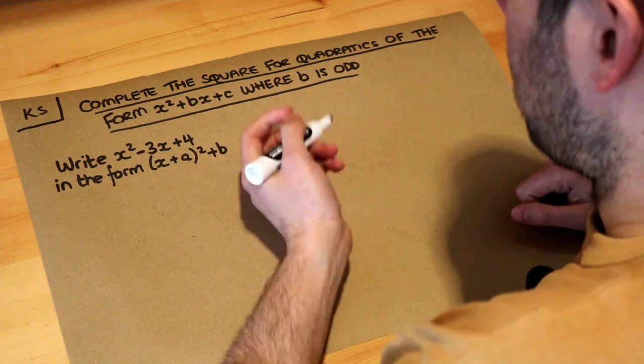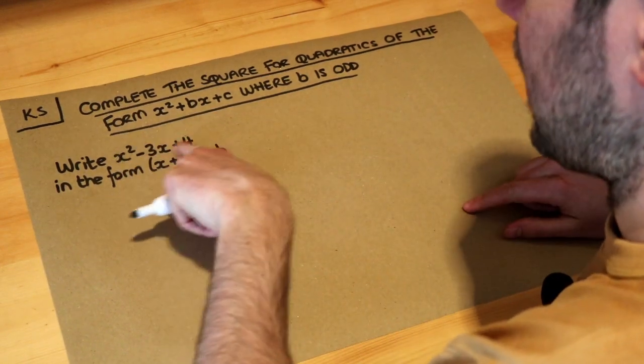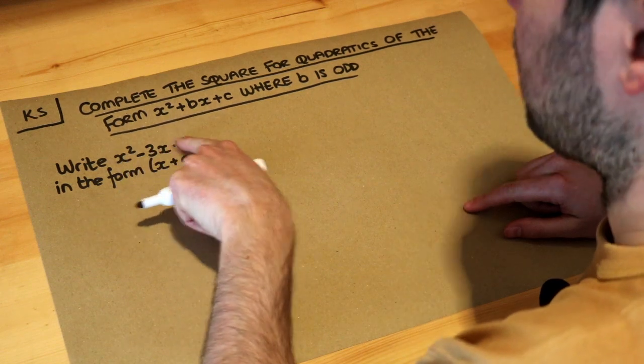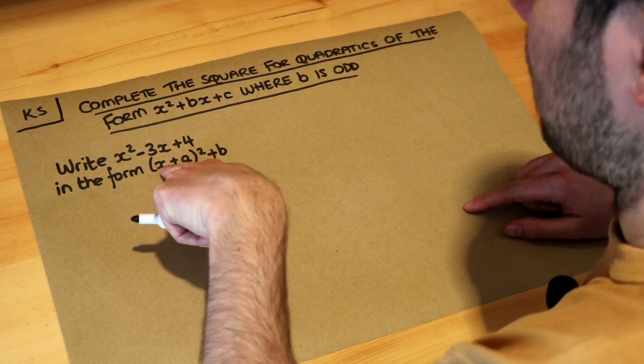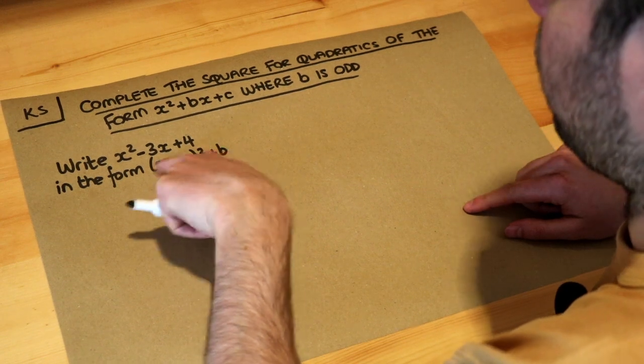Hopefully you've already seen the video on how you complete the square. It means to take a quadratic expression like this with an x squared term, an x term, a constant term, and write it in this form where we have no x squared term, it's just x plus or minus something all squared plus b.